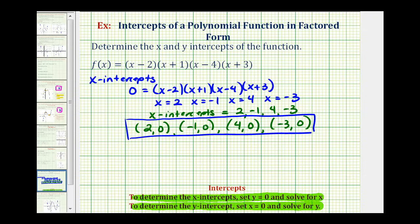Now let's determine the y intercept. To determine the y intercept of the function, we set x equal to zero and solve for y. Or in this case, because it's written in function notation, we want to determine f(0).